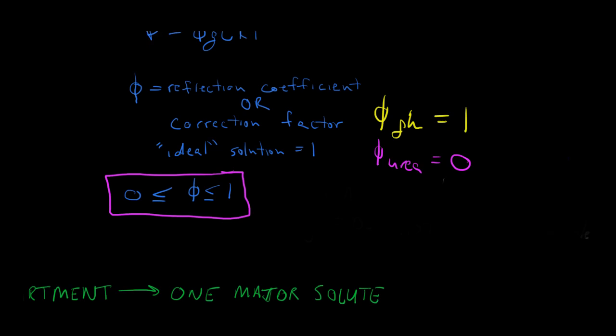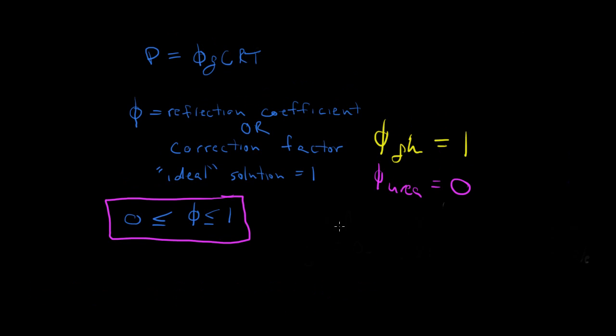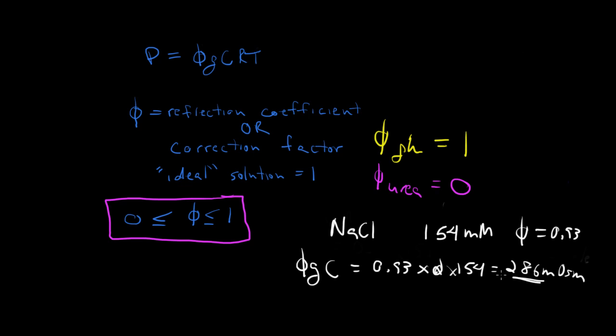To give you an example, we'll look at physiological salt, sodium chloride. If we have a concentration of 154 millimolar and our reflection coefficient equals 0.93, not quite 100%, then the front term in our equation equals 0.93 times 2 times 154 equals 286 milliosmoles. This is remarkably close to what we expect for our normal osmolarity of body fluids. This illustrates that sodium chloride is a major component in our body fluid.